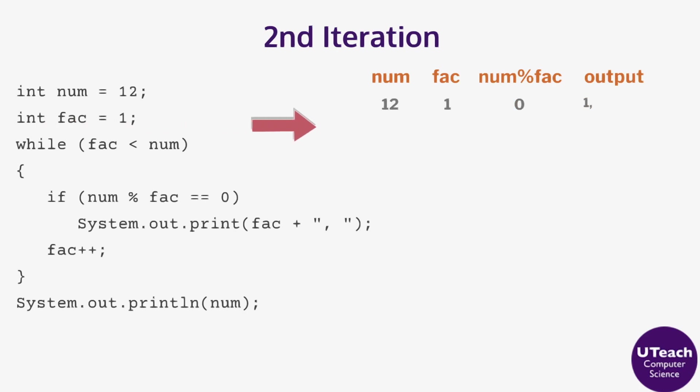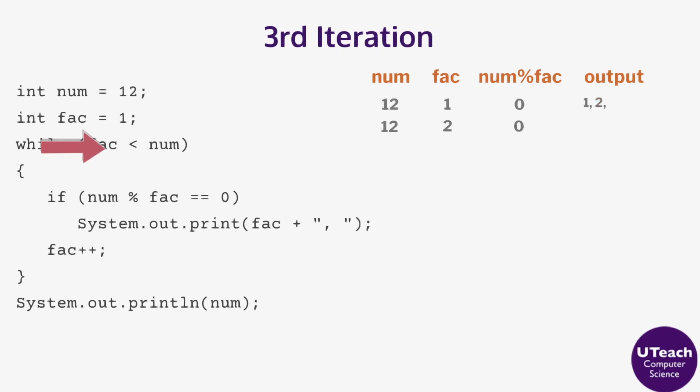For the second iteration, fact is less than num so the body of the loop executes. Checking that 12 mod 2 is equal to 0, the output is 2 comma. Fact is incremented to 3. For the third iteration, fact is less than num so the body of the loop executes. Checking that 12 mod 3 is equal to 0, the output is 3 comma. Fact is incremented to 4.